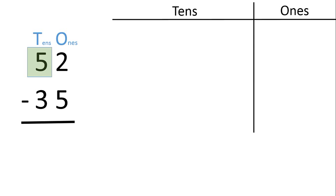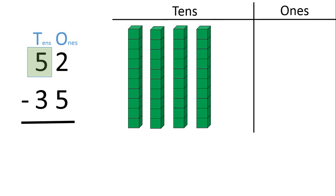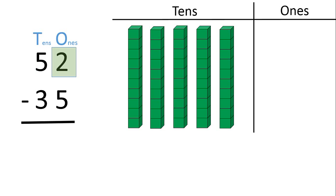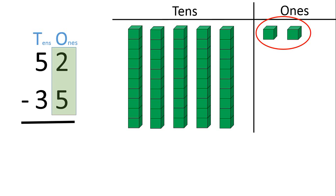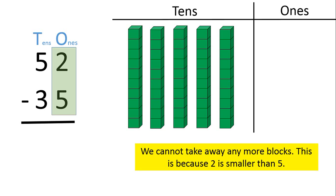The number 5 in the tens place, which represents 50, can be shown using 5 tens blocks: 1, 2, 3, 4, 5. The number 2 in the ones place can be shown using 2 ones blocks: 1, 2. We will begin subtraction with the ones place. We must subtract 5 from 2. Can we take away 5 blocks from the 2 ones blocks? We cannot take away any more blocks, because 2 is smaller than 5.